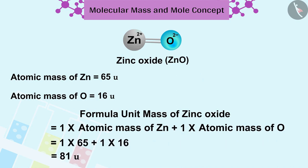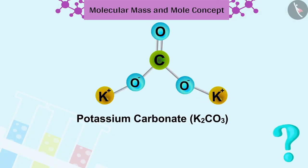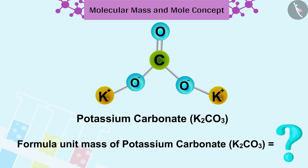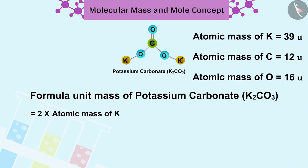Friends, can you find the formula unit mass of potassium carbonate K2CO3? To answer the question you can stop the video. Well done friends, you have found the perfect answer. The formula unit mass of potassium carbonate K2CO3 is 138u.